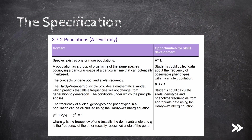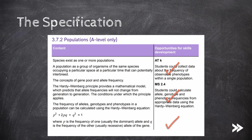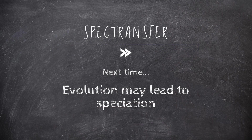Great, that would be populations covered. We have covered how species exist as one or more populations and how a population can be defined as a group of organisms of the same species occupying a particular space at a particular time that can potentially interbreed. We have also covered the concepts of gene pool and allele frequency, the Hardy-Weinberg principle and how it provides a mathematical model predicting that allele frequencies will not change from generation to generation, the conditions under which the principle applies, and how to calculate the frequency of alleles, genotypes and phenotypes using the Hardy-Weinberg equation. That's it for now guys, thanks for watching — please subscribe and comment. Next time we will be covering how evolution may lead to speciation.